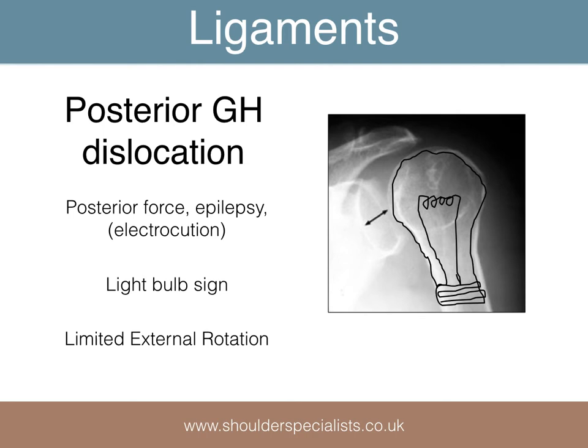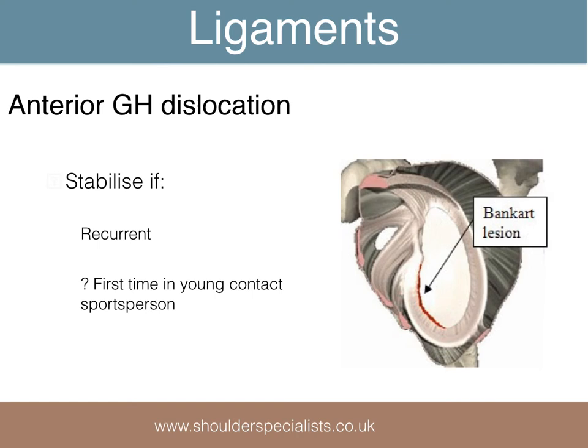Posterior dislocations occur in trauma, not surprisingly, with a posteriorly directed force, often in a forward-flexed and adducted arm. However, they should also be considered when a patient presents with shoulder pain following a fit. Examination of a patient with a posterior dislocation will reveal very limited external rotation and the so-called lightbulb sign on an AP x-ray.